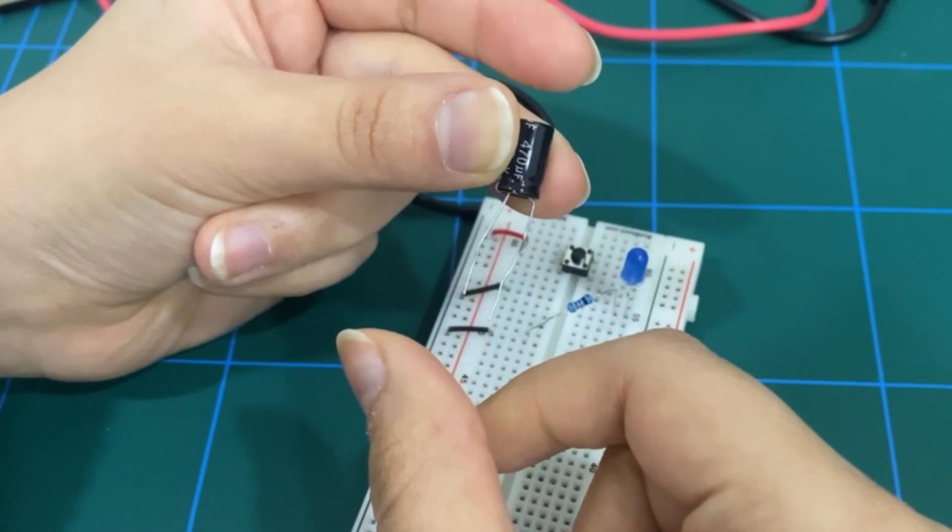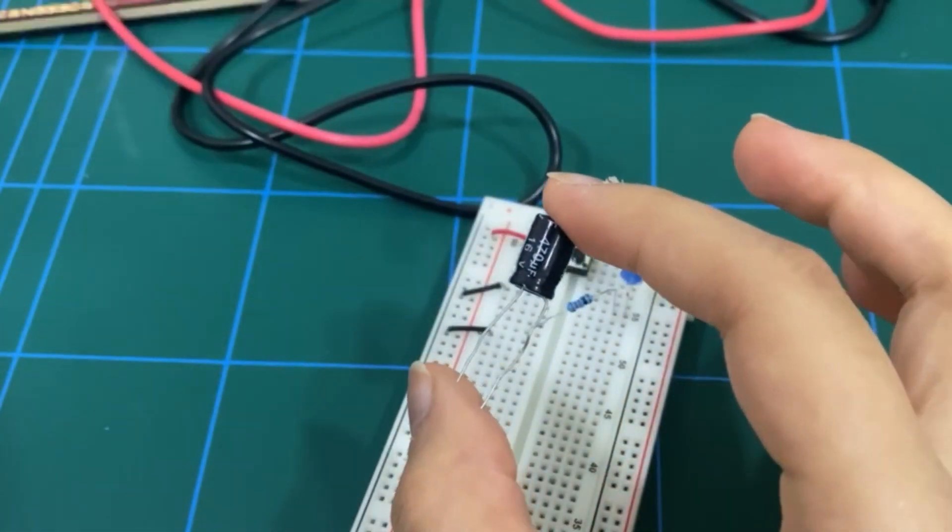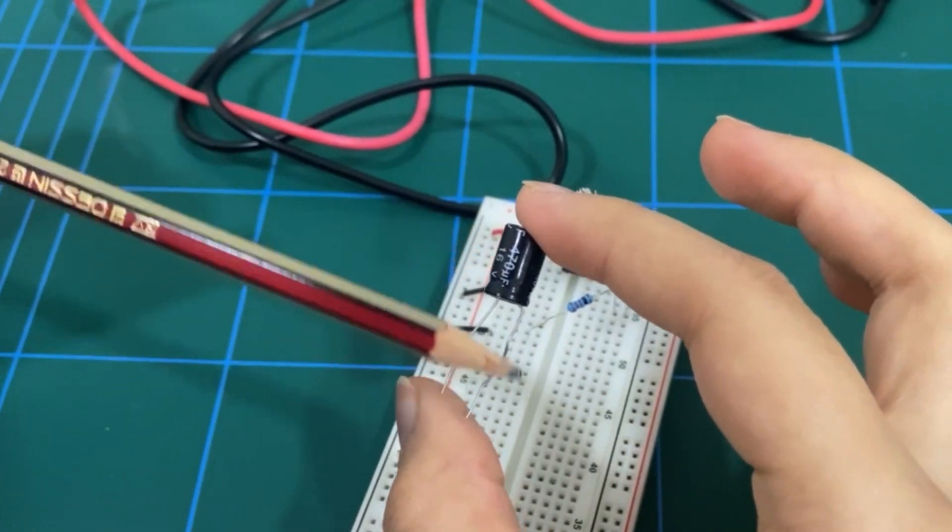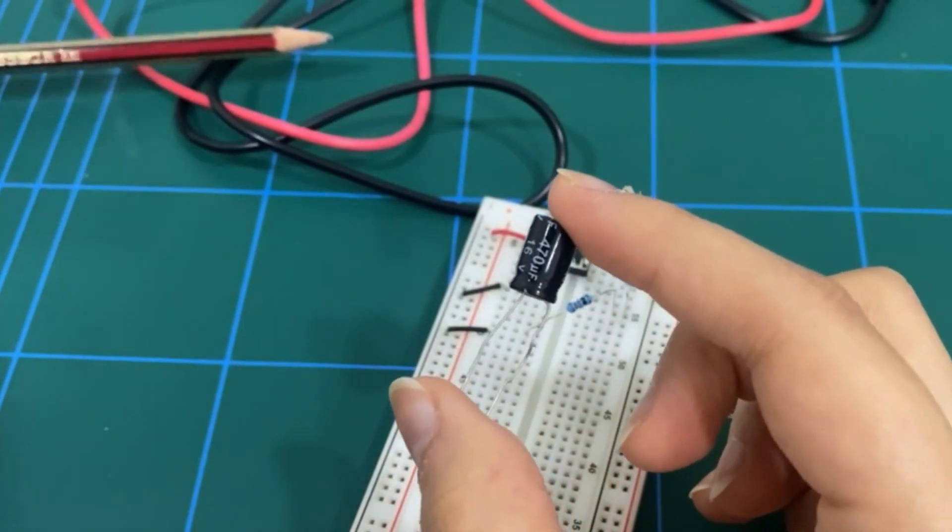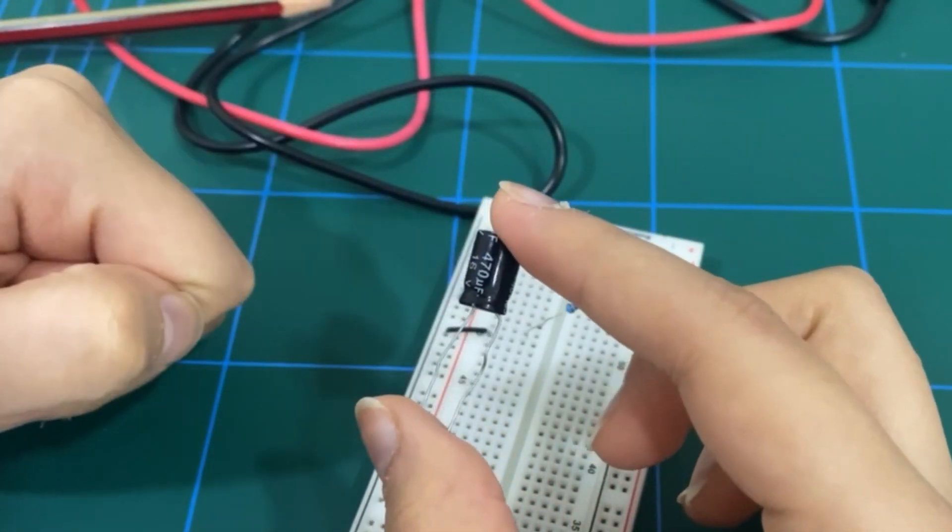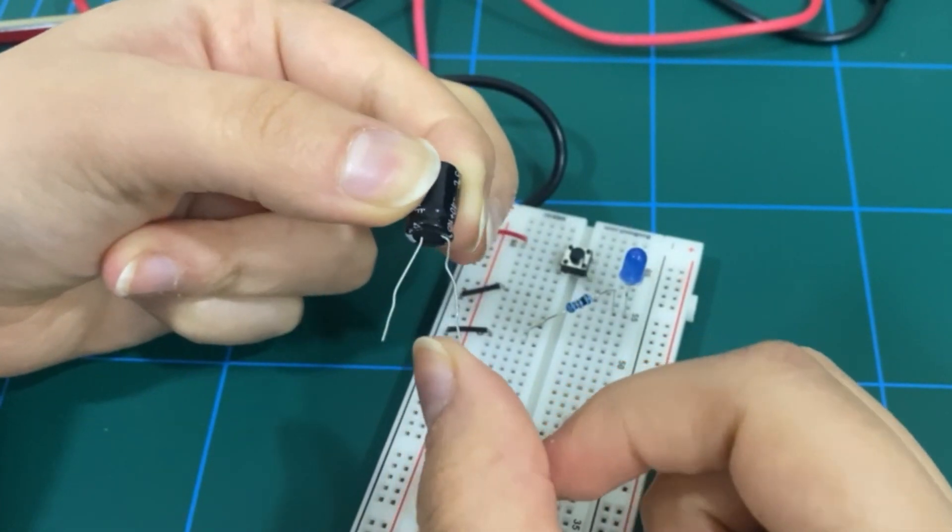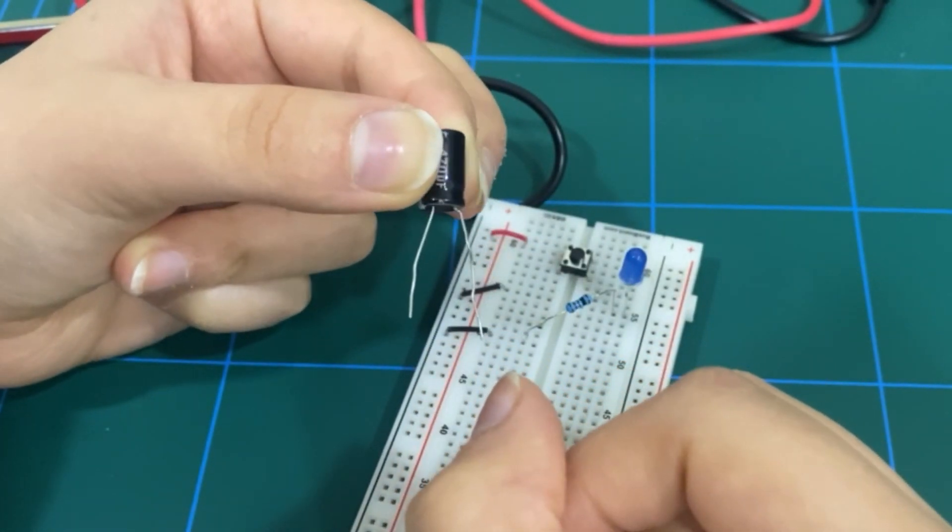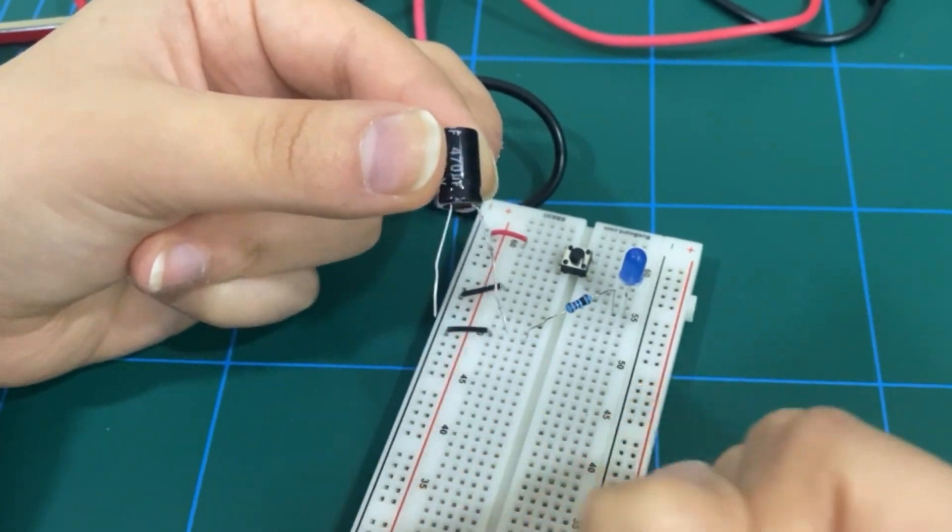And the way you can easily identify the positive and negative terminals is through either looking for this negative over here or through identifying the positive terminal of the capacitor by looking at the longer end of the wires or the terminals of the capacitor.